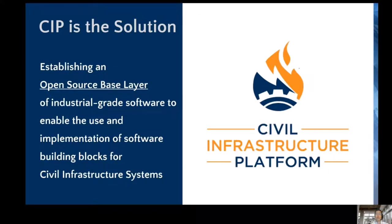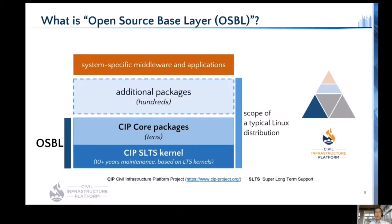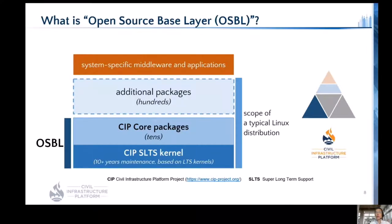Motivated to solve these issues, Civil Infrastructure Platform — CIP — aims to develop building blocks to satisfy industrial requirements with open source. We named such building blocks the Open Source Based Layer, or OSBL. OSBL consists of CIP SLTS kernel and CIP core packages. SLTS stands for Super Long-Term Support, and we aim to maintain SLTS kernels for 10-plus years. CIP core packages contain only dozens of carefully selected packages that will likewise be maintained long-term.